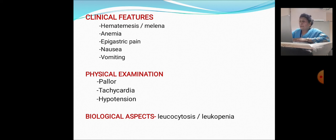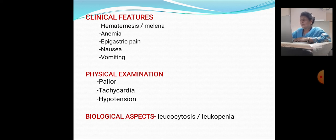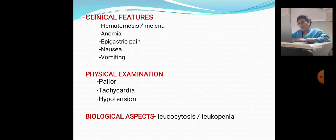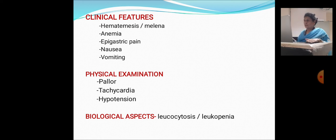Nausea and vomiting are also clinical features. On physical examination, pallor can be seen in the conjunctiva, oral cavity, mucous membranes, lips, nose, nails, and skin due to anemia or blood loss, either sudden or gradual. Tachycardia is defined as heart rate exceeding 100 beats per minute. Hypotension is defined as systolic blood pressure falling below 90 mmHg, with severe cases showing systolic below 60 mmHg. Biological aspects may show leukocytosis or leukopenia.